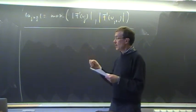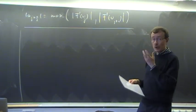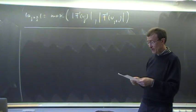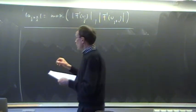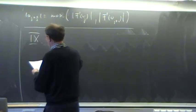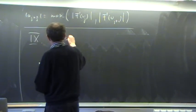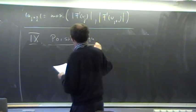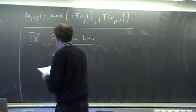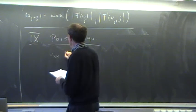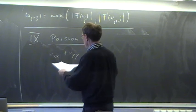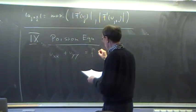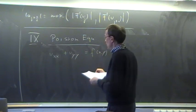After having treated the nonlinear problem focusing on the hyperbolic part, we move on to the Poisson equation in 2D: the second derivative of u in x plus the second derivative of u in y equals some given right-hand side.